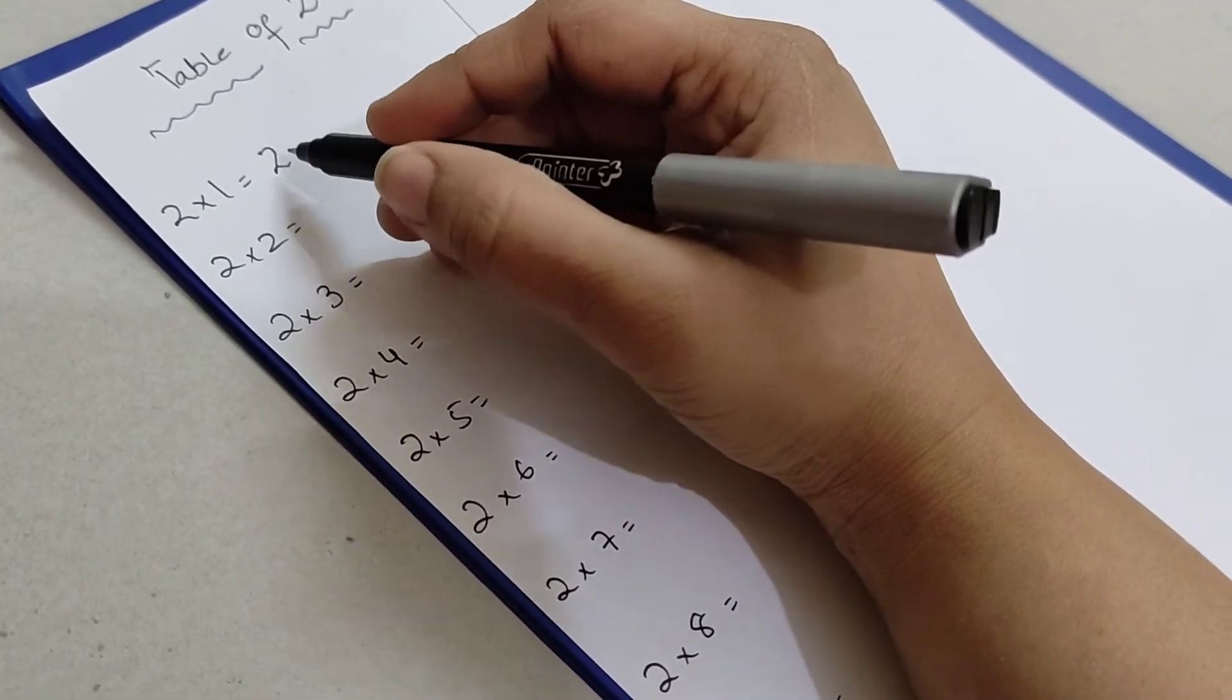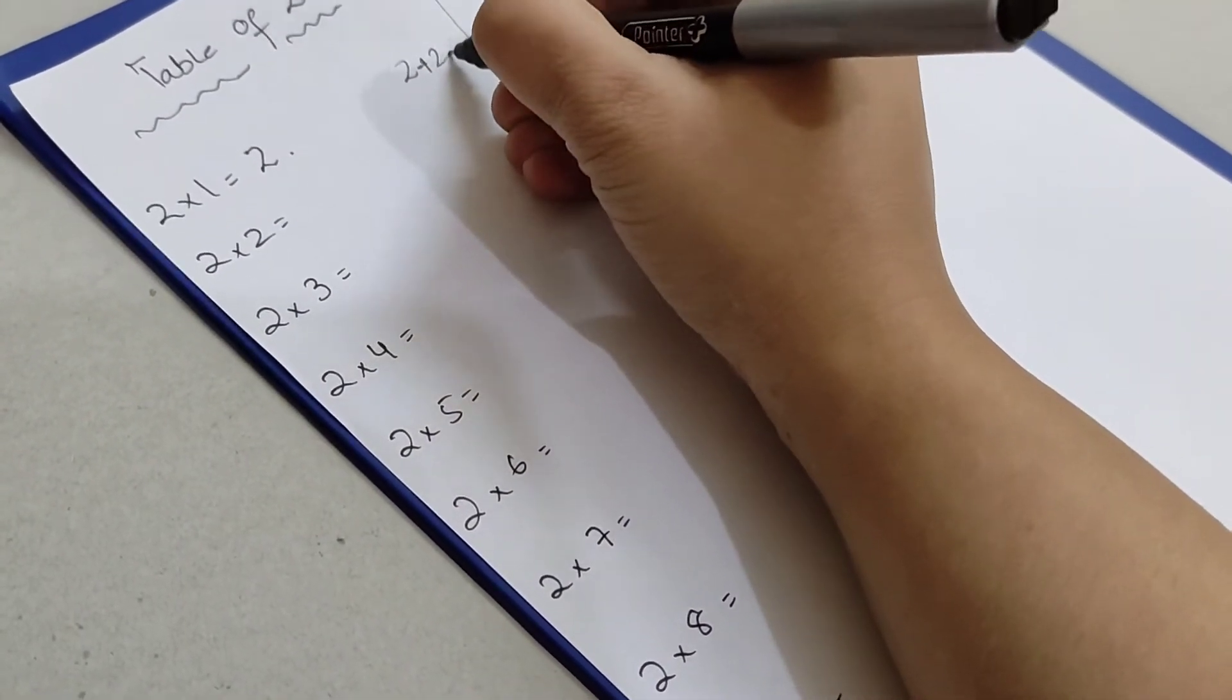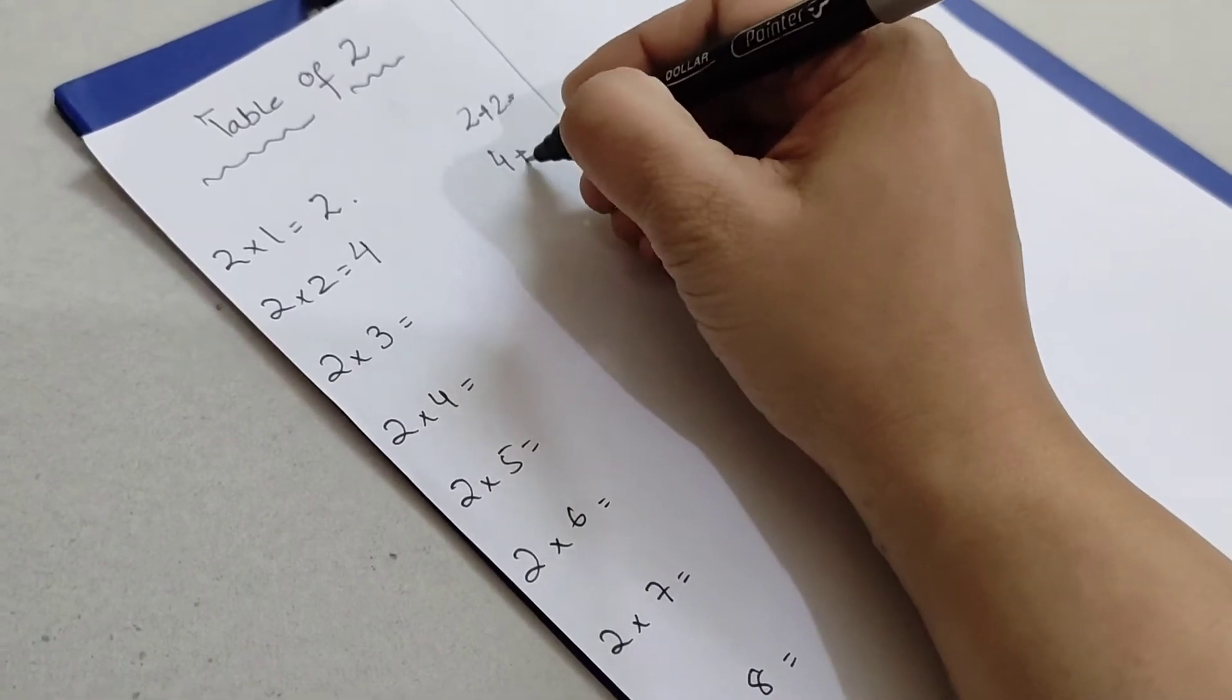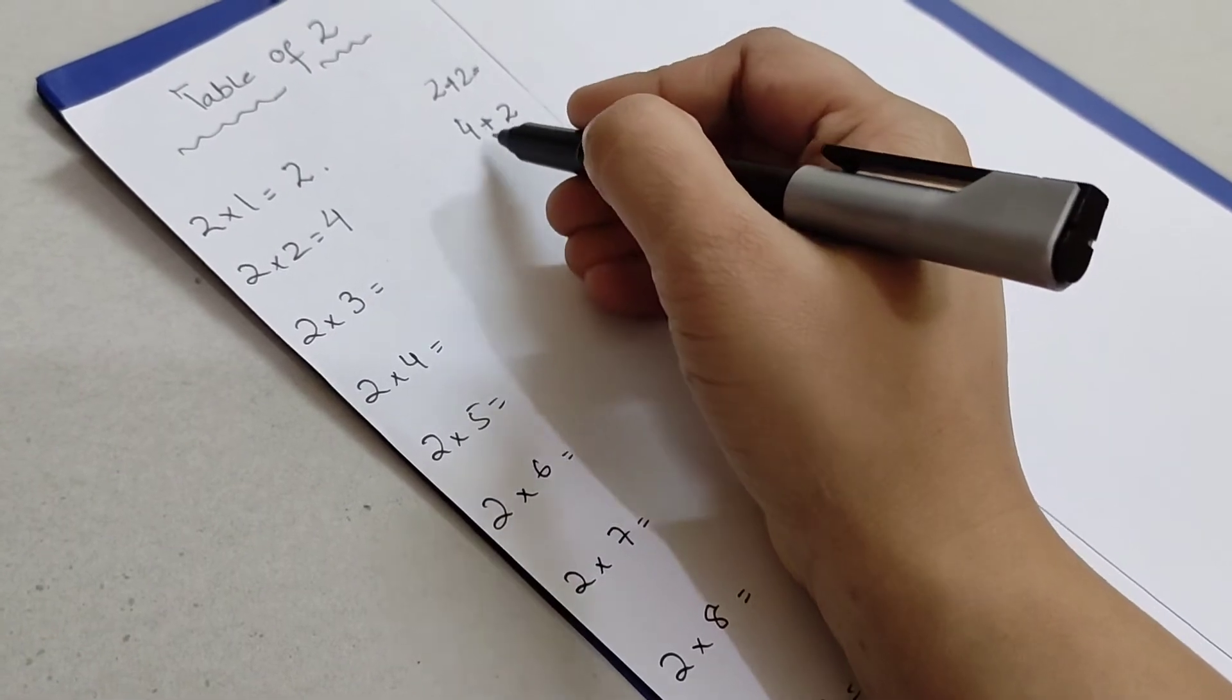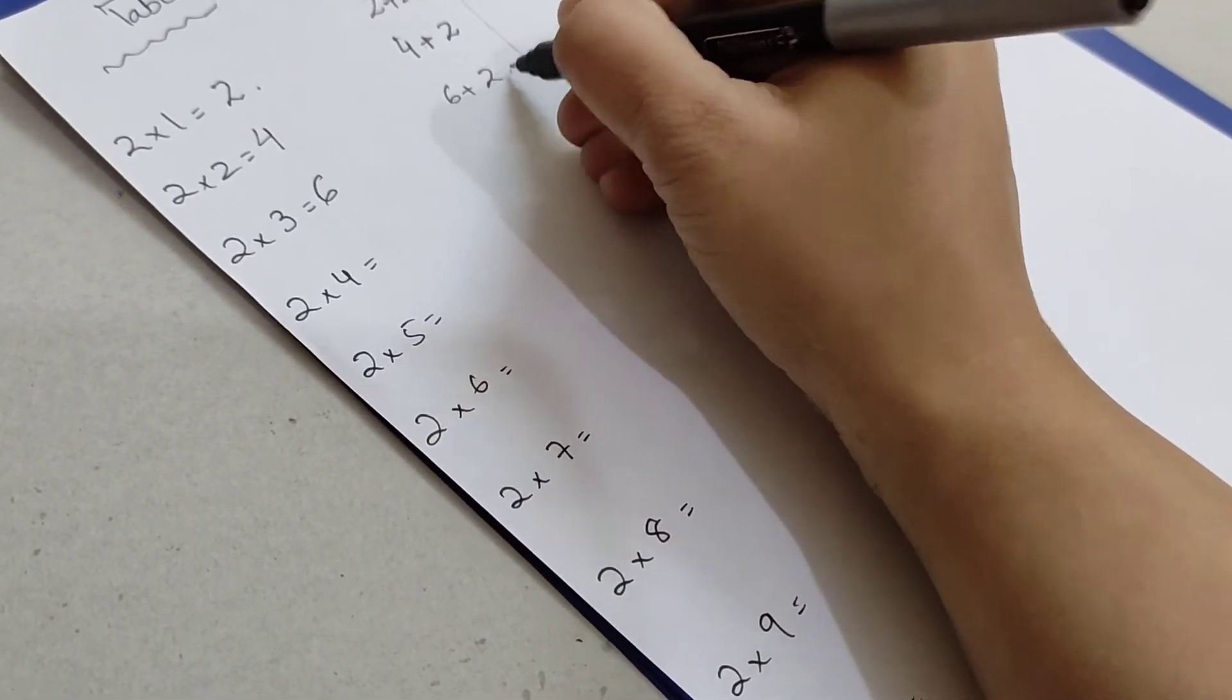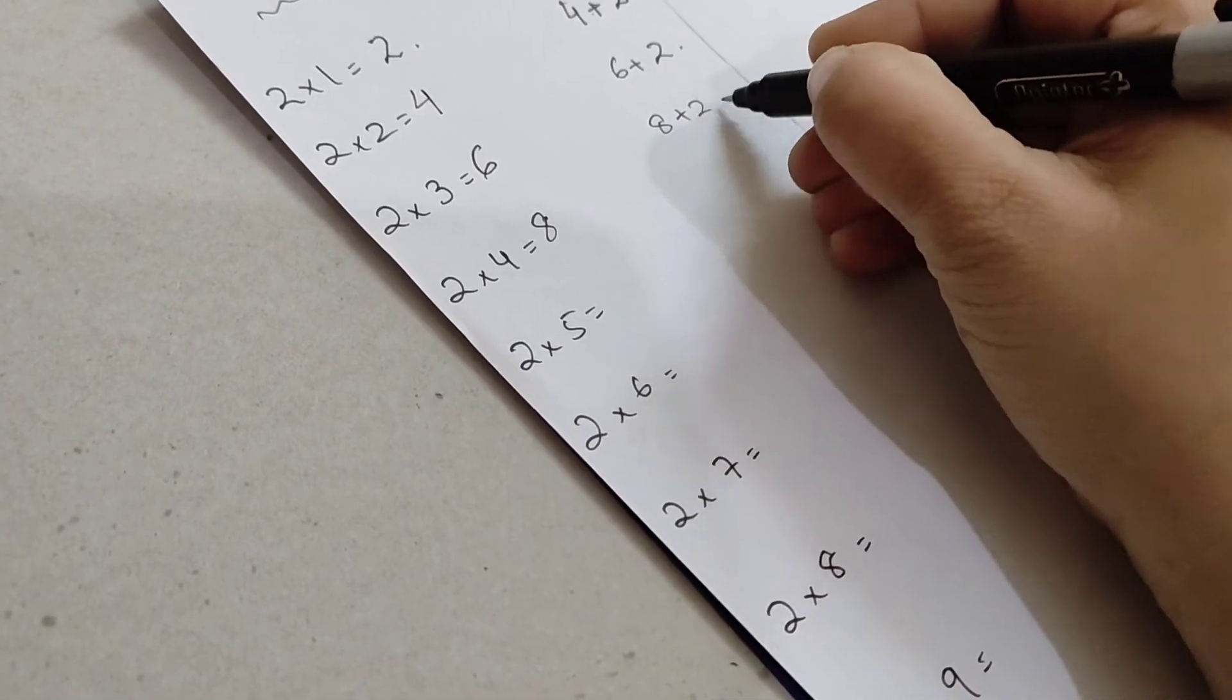Two times one is two. Then adding two into two will be four, so two times two is four. Same way, when you have four, you will add two more into four, which will be six. Same way, six, add two more, it'll be eight.